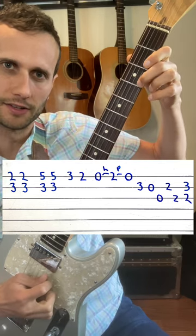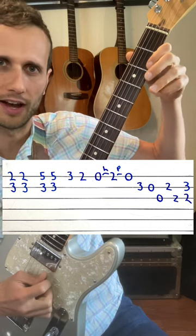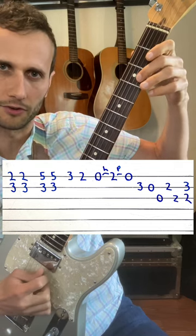Third fret on the high E string. Go down one fret. Do a hammer-on pull-off with your first finger on the second fret of the high E. Second finger, third fret on the B string.